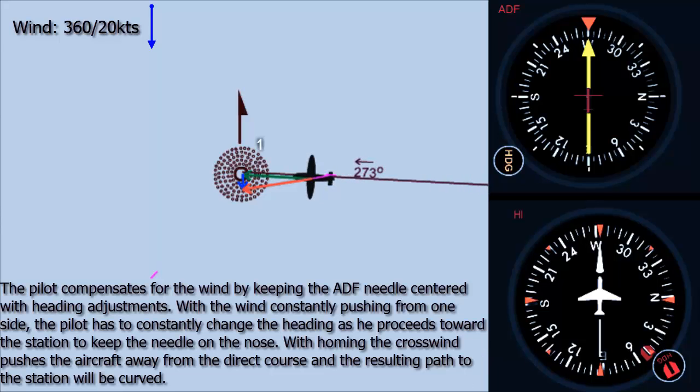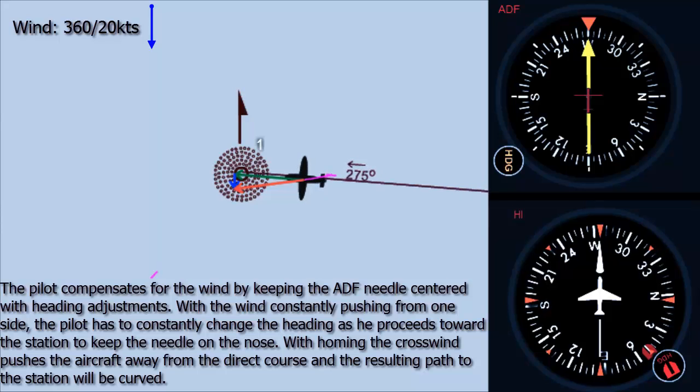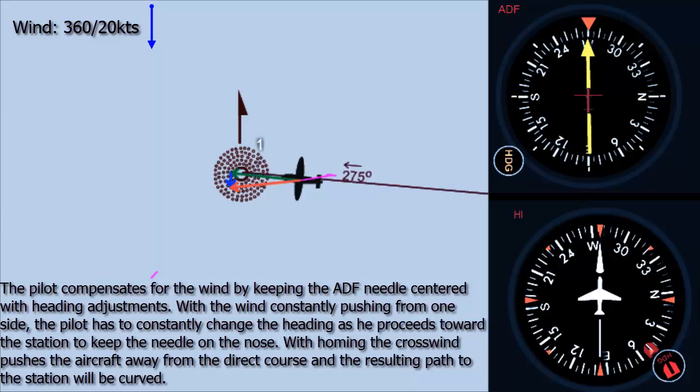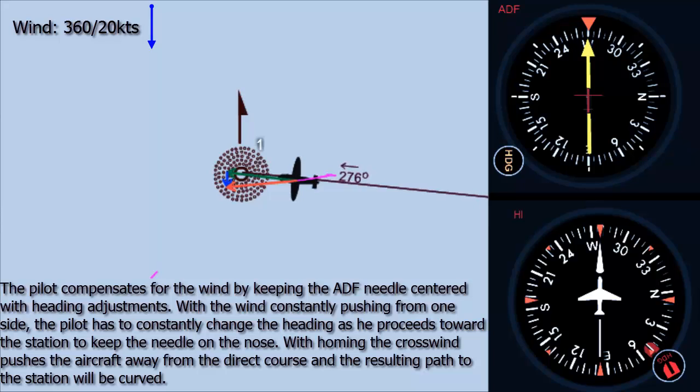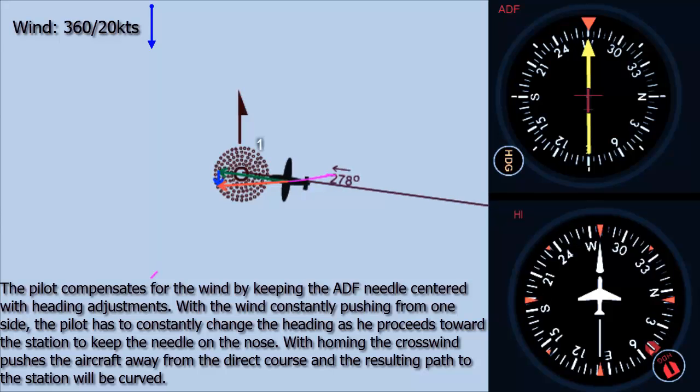The pilot compensates for the wind by keeping the ADF needle centered with heading adjustments. With the wind constantly pushing from one side, the pilot has to constantly change the heading as he proceeds toward the station to keep the needle on the nose. When homing, the crosswind pushes the aircraft away from the direct course and the resulting path to the station will be curved.